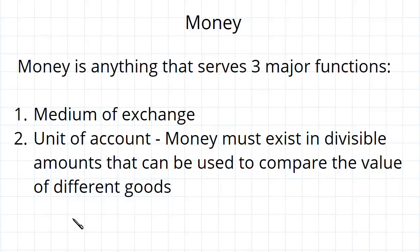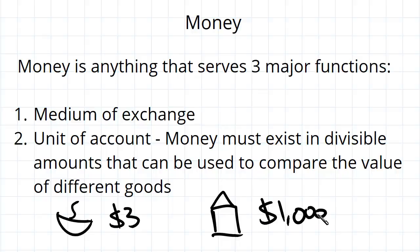For example, a cup of coffee maybe costs $3 so I can measure the value of that cup of coffee in terms of money. Maybe a house costs $1 million. Whatever good I am looking at that I want to be able to purchase, I should be able to evaluate what it is.